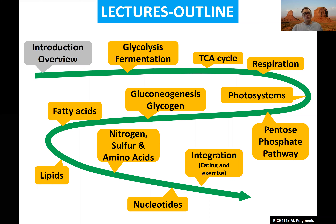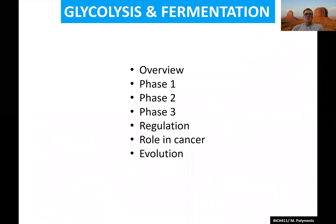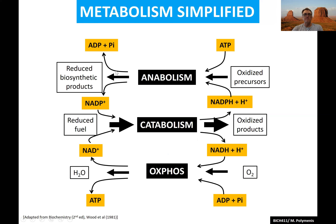Today we're going to start describing the first metabolic pathway in the class: glycolysis. It's a universal pathway — every cell has it — and in fact it's the most ancient metabolic pathway in the cell. This is the overview of all the videos we're going to do for glycolysis, starting with the first one: the overview of the pathway and where it fits in the general large organizing scheme of biochemistry.